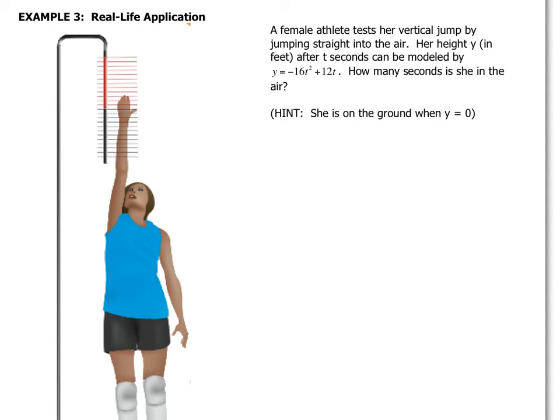Here we have another real life application. We have a female athlete who's trying to test her vertical leap. Basically how high can she jump from two feet, standing two feet straight up in the air. We're trying to look at her height in t seconds. We're given the function y = -16t² + 12t. Now we're going to talk more about this kind of model down the road, just so you can start hearing it and start thinking about it.